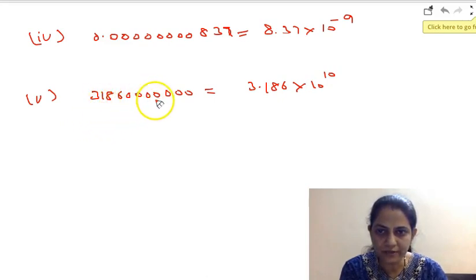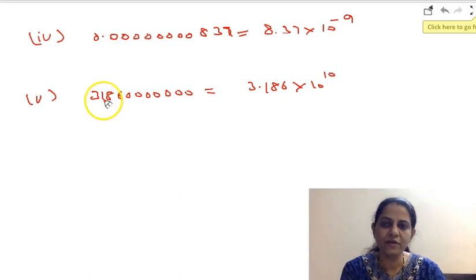Now here, there are 7 digits. So if I want to write it in standard form, it will become 3.186 × 10^10.